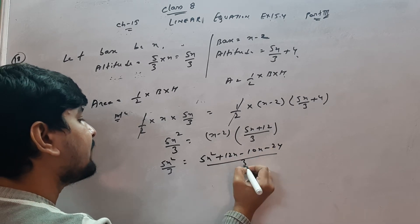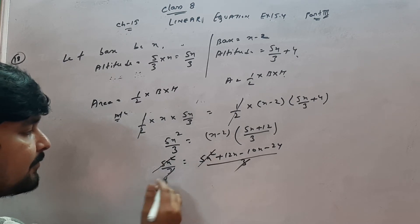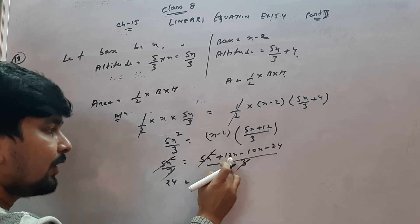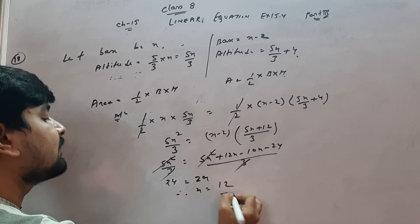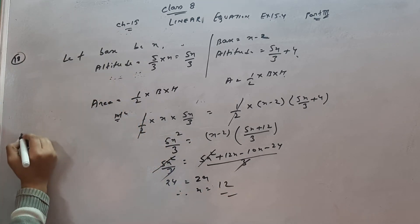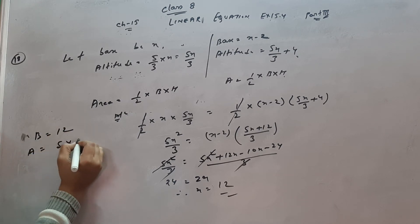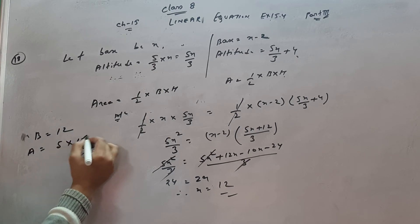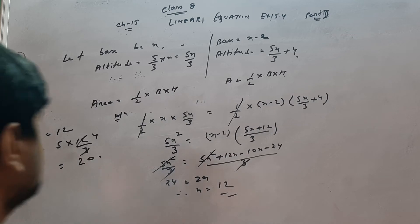Expanding: 5x² = 5x² + 12x minus 10x minus 24. The 5x² cancels on both sides, leaving 0 = 2x minus 24, so 2x = 24, therefore x = 12. The real base was 12 and altitude was 5×12/3 = 20. So base was 12 and altitude was 20. Note kar lijiye.